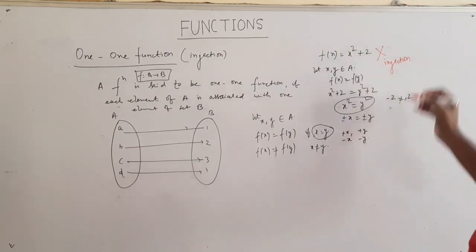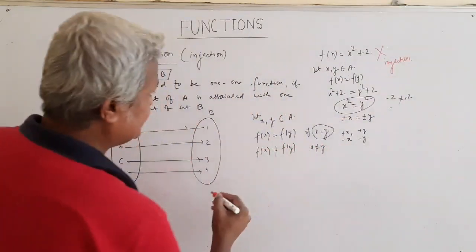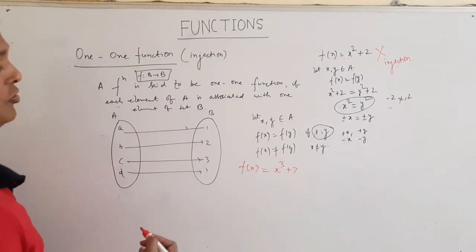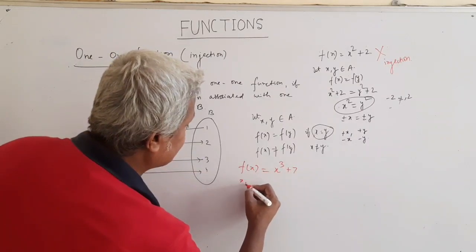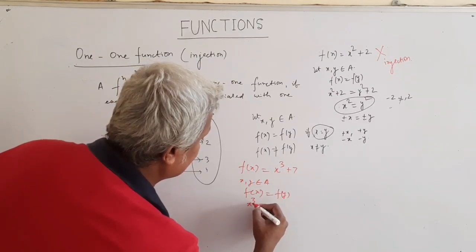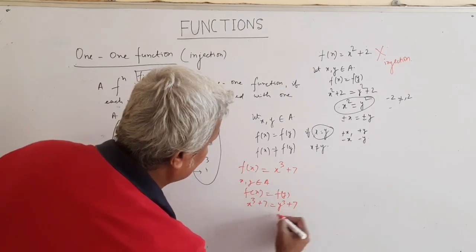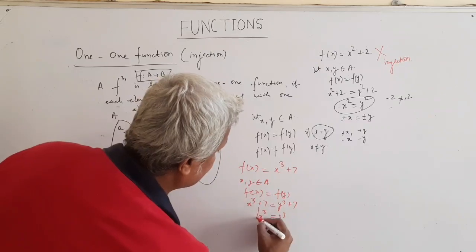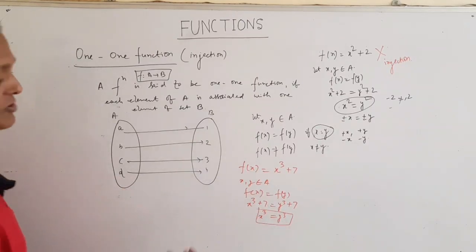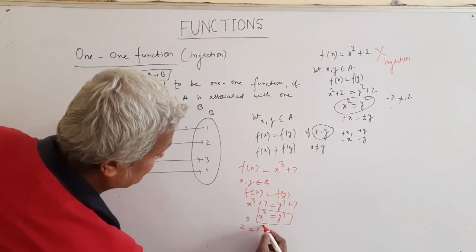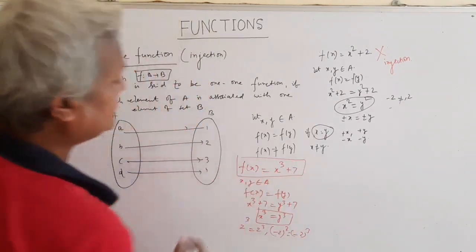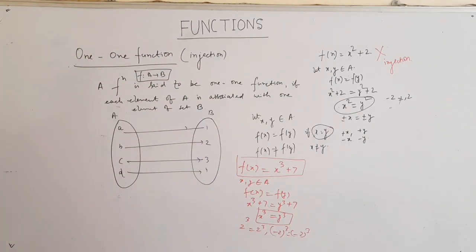However, for f(x) = x³ + 7: pick x and y such that f(x) = f(y). Then x³ + 7 = y³ + 7, giving x³ = y³, which always yields a unique value. For example, 2³ = 8 and (-2)³ = -8 — these are different. Therefore f(x) = x³ + 7 IS an injection or one-one function.